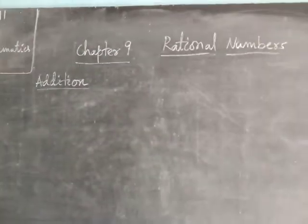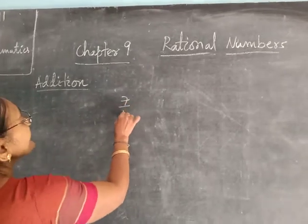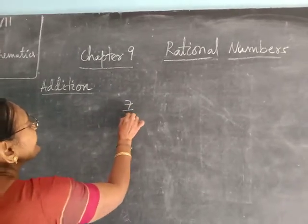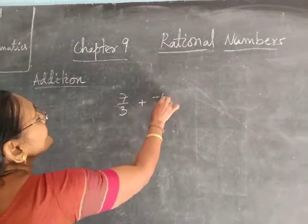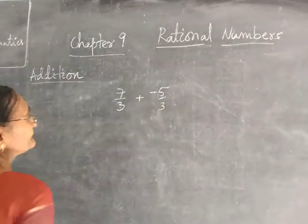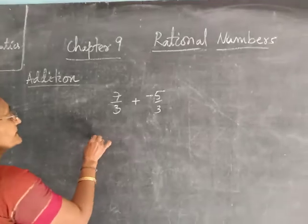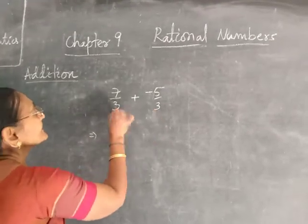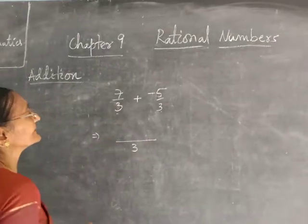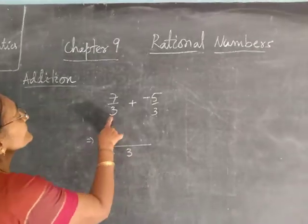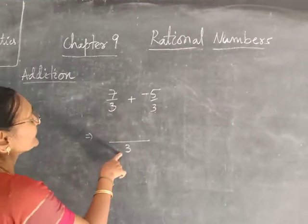Suppose the question is 7 by 3 plus minus 3 by 3. Then how we will do? First, you see the denominators are equal. Then the common denominator will come. Then divide the numerator by the denominator. 3 divided by 3 — how much will come?